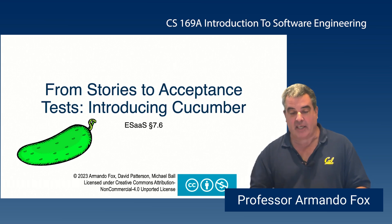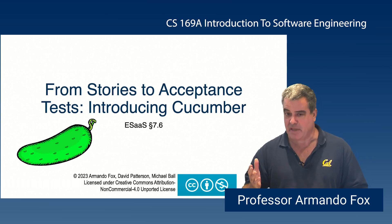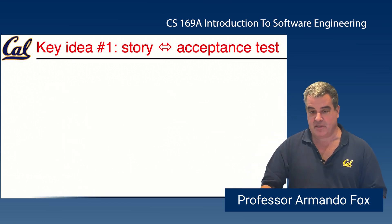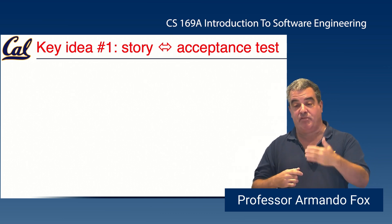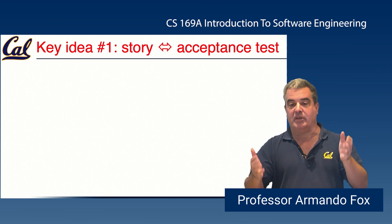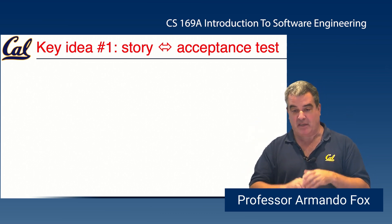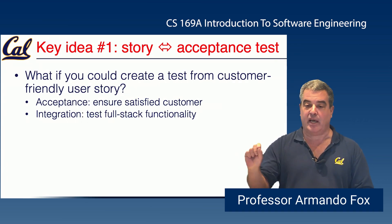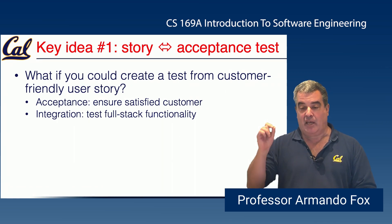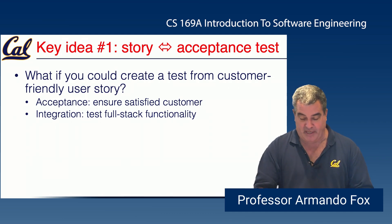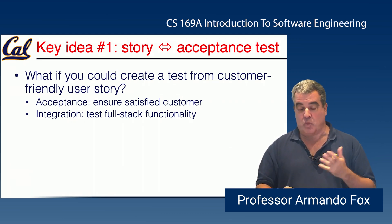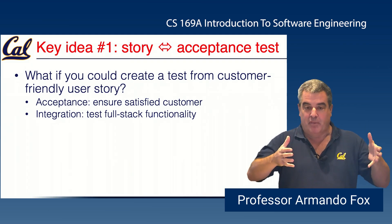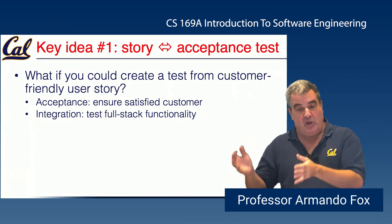There are two key ideas that underlie Cucumber, which is maybe the coolest testing tool and certainly the best name I've ever used. The first key idea is the correspondence between a user story and an acceptance test. An acceptance test is basically validation — asking the user: here's the thing we built, can you confirm it behaves the way you expect? If the story is SMART, it describes a specific sequence of actions and desired outcomes, so you get two benefits: you automate what the customer wanted, and you get an acceptance test.